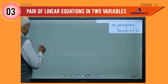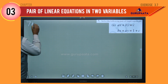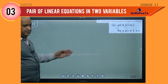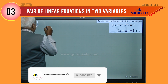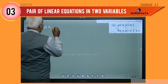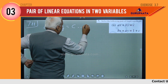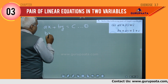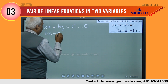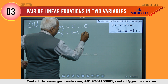Our next question is question number 7.2. In 7.2 there are two equations, so I will write them one by one. That is Ax plus By equal to C — let it be equation number 1. The second equation they have given is Bx plus Ay equal to 1 plus C — let it be equation 2.